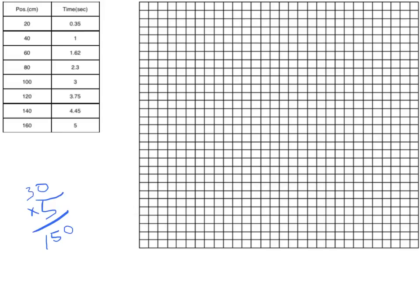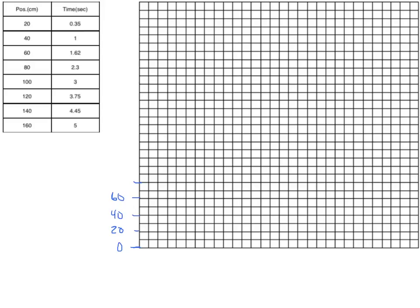We need to go all the way up to 160, so we need a value bigger than 5 — maybe a value of 10 for each box. Remembering that the origin is always our zero value, two boxes at 10 each gives us 20, and we continue working our way up: 20, 40, 60, 80, 100, 120, 140, and finally 160.